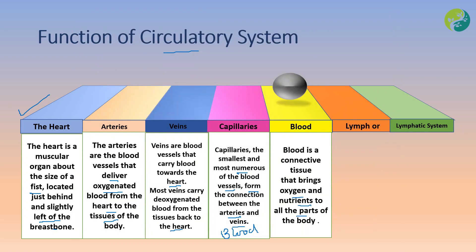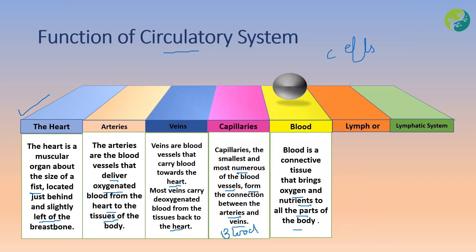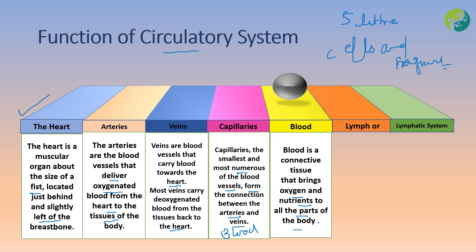Blood is a connective tissue that brings oxygen and nutrients to all parts of the body. As a connective tissue, it consists of cells and cell fragments suspended in an intercellular matrix called plasma. Blood is the only liquid tissue in the body, measuring about five liters in an adult, and accounts for about eight percent of body weight.